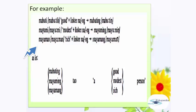As in: 'mabuting tao' (a good person), 'mayunging tao' (a modest person), 'mayamang tao' (a rich person).